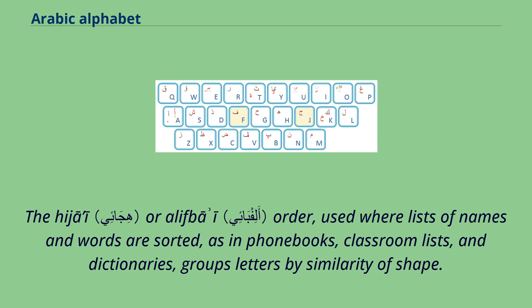The Hijai or Alifba'i order, used where lists of names and words are sorted, as in phone books, classroom lists, and dictionaries, groups letters by similarity of shape.